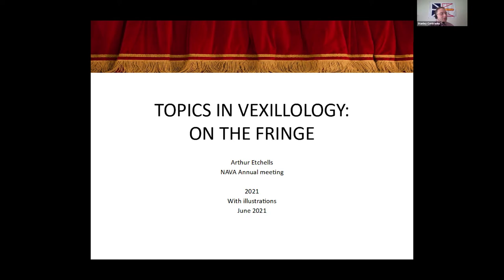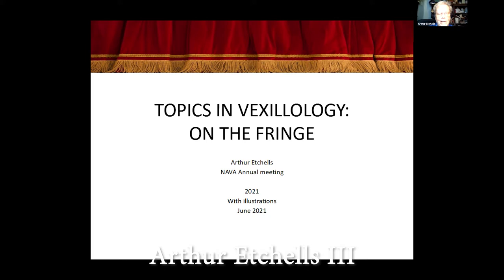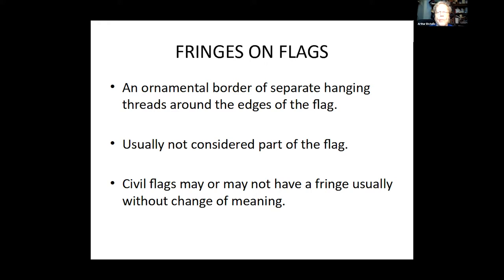I will be talking about a fringe topic — the fringe. So, what is a fringe? It's the ornamental border of separate hanging threads around the edges of the flag, usually not considered part of the flag. Civil flags may or may not have fringe. We're going to go back through history and find out where the fringe came from and how we got to where we are today.